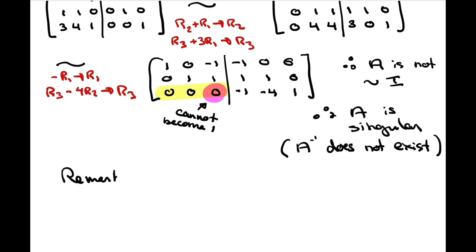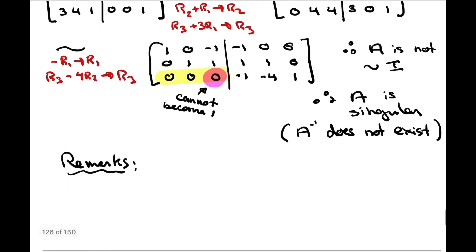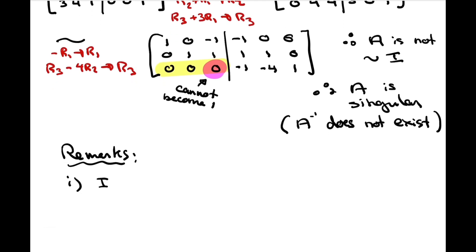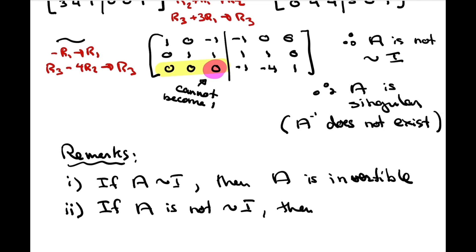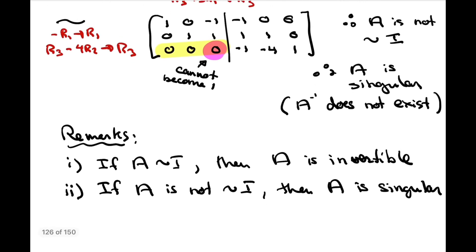Just a couple of remarks on what we've just seen. In part A of this exercise, we used the fact that if A is row equivalent to I, then A is invertible. But in part B, we used that if A is not row equivalent to I, then A is singular. I want to draw your attention to the fact that we proved the first statement in the last section, but we have not yet proven the second statement.